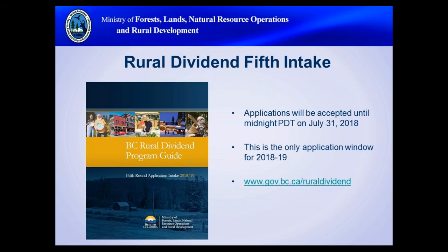The Rural Dividend Program's fifth application intake period is currently open and will close on July 31st at midnight Pacific Daylight Time. This will be the only intake period for this fiscal year, so we strongly encourage anyone considering a potential project to submit an application. All potential applicants should visit the program website, which includes a frequently asked questions page, the updated program guide, an application checklist, and the fifth intake budget form.